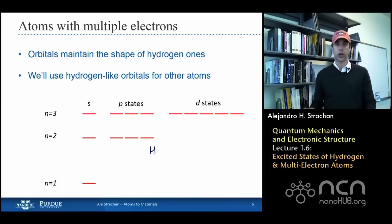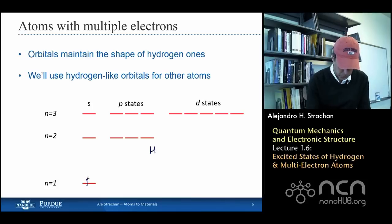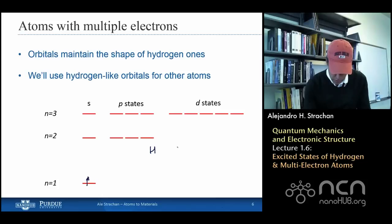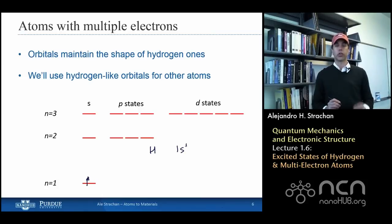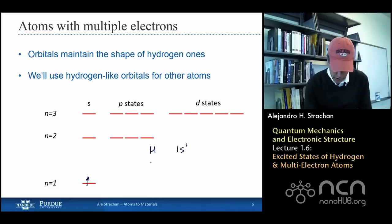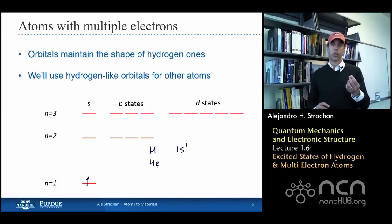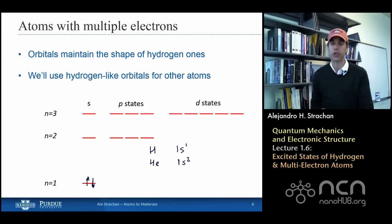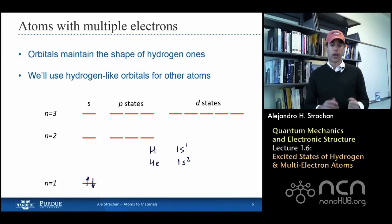Starting with hydrogen: the ground state has a single electron described with a spin-up arrow — the electronic configuration is 1s1, meaning one electron in the 1s orbital. The next atom is helium, which has two protons and two electrons. I put one additional electron in the lowest possible state — the electronic configuration of helium is 1s2, two electrons in the 1s orbital. Remember, Pauli allows two electrons in the same orbital as long as they have opposite spin.